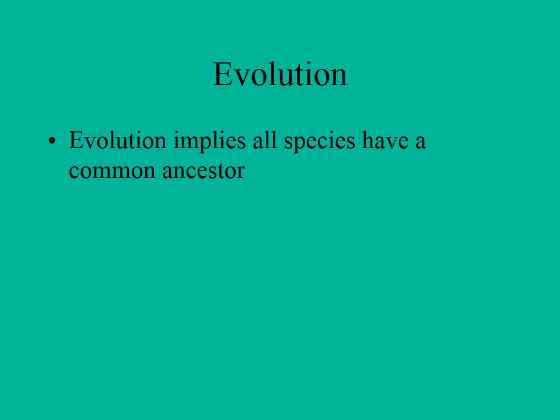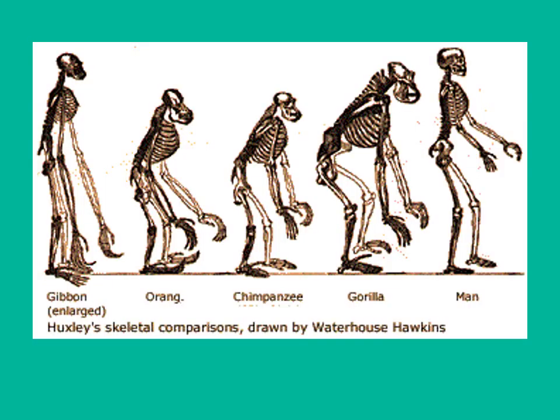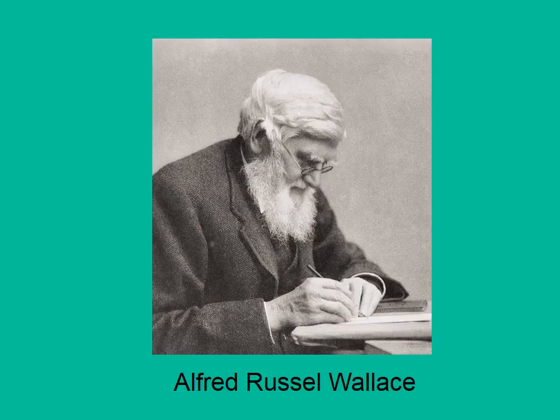An interesting thing about evolution is that it implies we all have a common ancestor. We share a common ancestor with a tree, with bacteria, with a horse, with a lizard, with monkeys — with every type of organism alive on the planet, and all the ones that have gone extinct. It's very apparent that there is commonality when you start looking at organisms from a genetic standpoint, from an evolutionary or geological standpoint, and using comparative biology. There is a very clear picture of the way in which humans and other animals have descended through geological time.